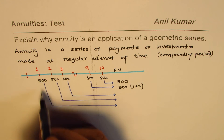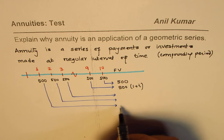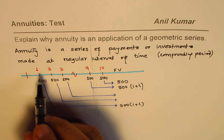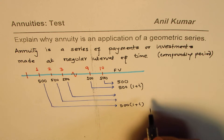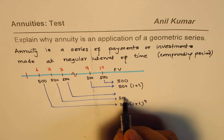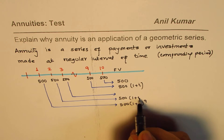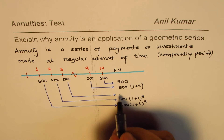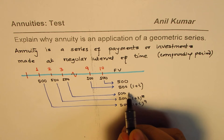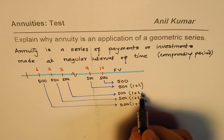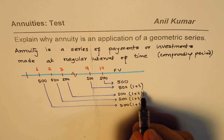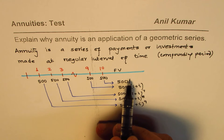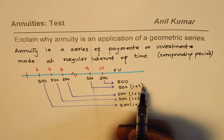For example, the first deposit will be returned as 500 × (1 + i)^9, the second as 500 × (1 + i)^8, the third as 500 × (1 + i)^7, and so on down to 500 × (1 + i)^1 and finally 500 × (1 + i)^0.